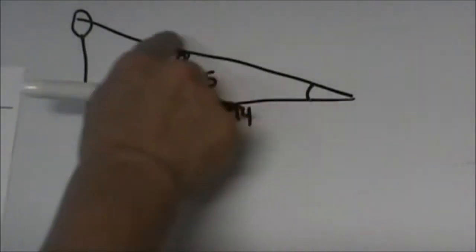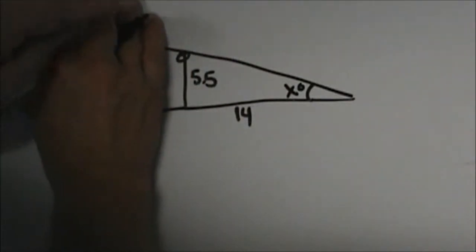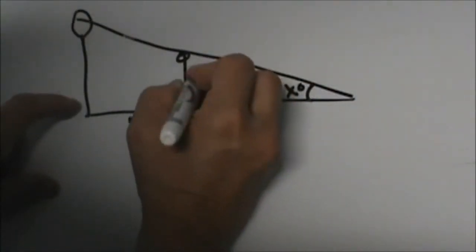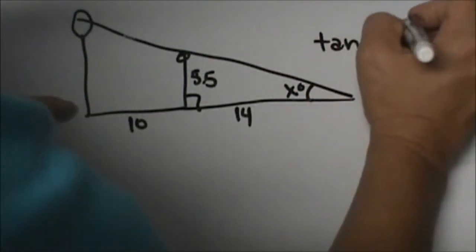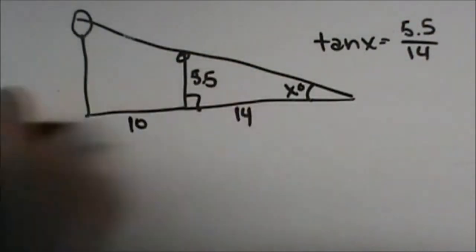So let's focus on just this small triangle. Let's figure out x. Using just the small triangle, which two sides do we have? We have opposite adjacent, so we have tangent. The tangent of x is equal to 5.5 over 14, or the opposite over the adjacent.